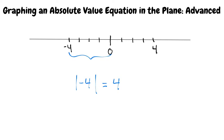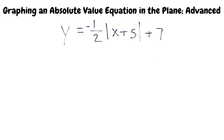Although in this example only a single number was bounded by the absolute value signs, there are many examples where equations may contain a function instead. Given the equation y equals negative 1 half absolute value of the quantity x plus 5 plus 7, let's walk through the steps required to graph it.